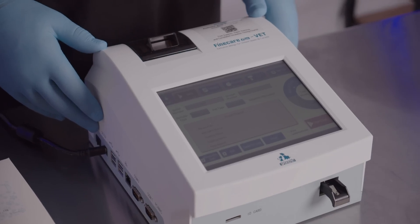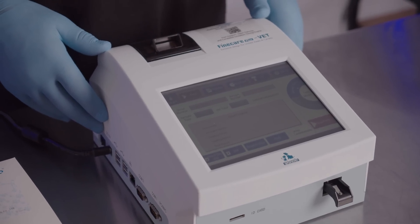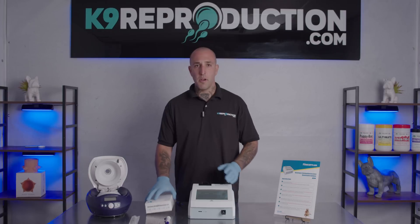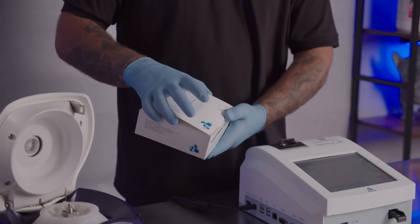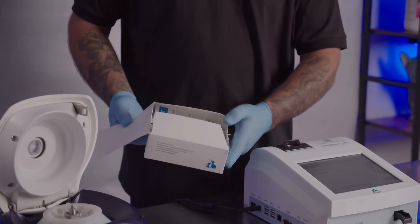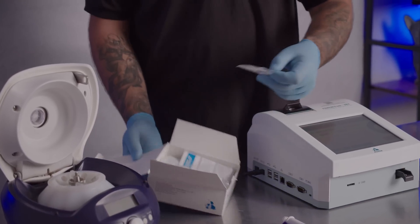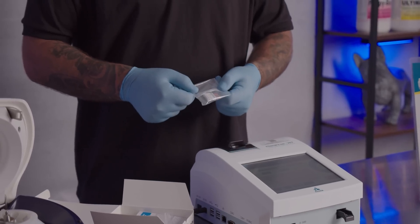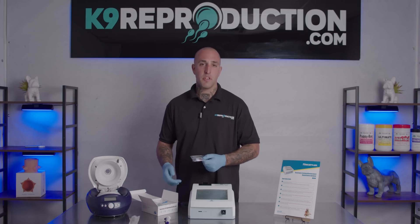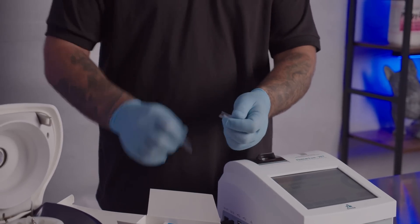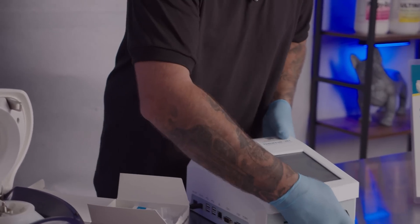Step one, we're going to turn on the machine and allow it to come up to operating temperature. From there we can open up our box of progesterone tests. Inside of the box you're going to find an ID chip. The ID chip has the calibrations built into it. Each box of tests comes with a new ID chip. We're going to open it up and insert it into the front of the machine.